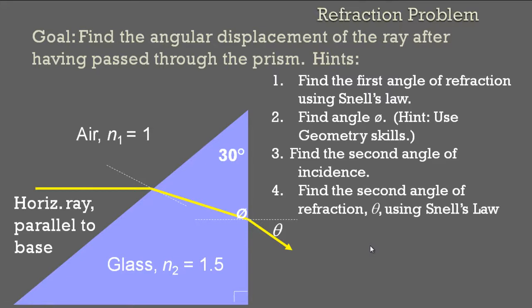Goal, here's a problem for you: find the angular displacement of the ray after having passed through the prism. Hints: find the first angle of refraction using Snell's law. We have a ray coming in, it's hitting the glass, and then it's going down here. I give you the indexes of refraction for both of these. The index of refraction of air is 1, in glass it's 1.5. So you find the index of refraction here. Since this angle is 30, this angle in here is going to be 30.